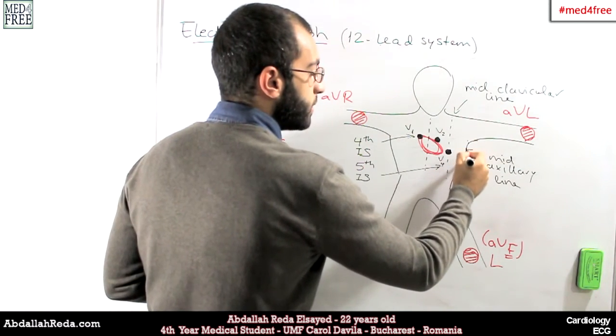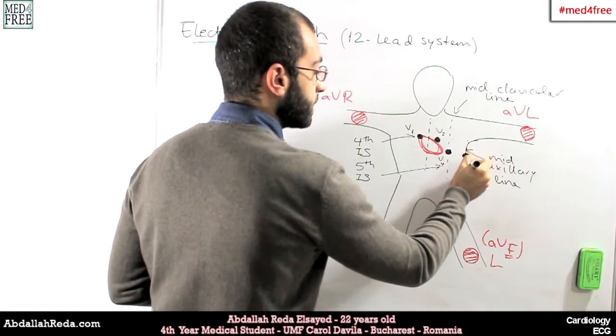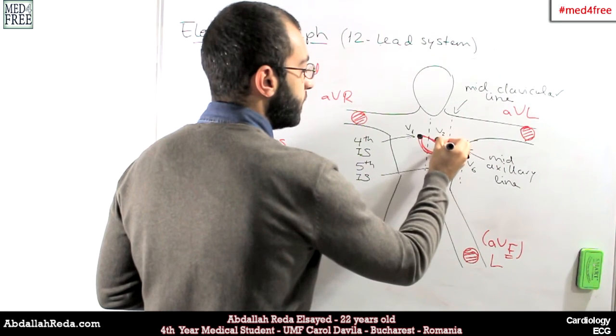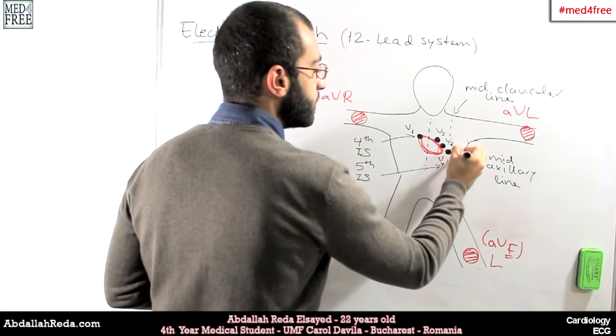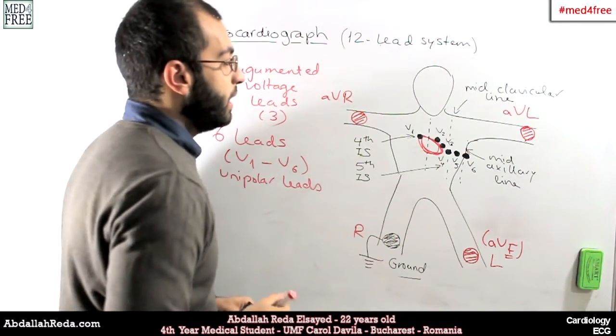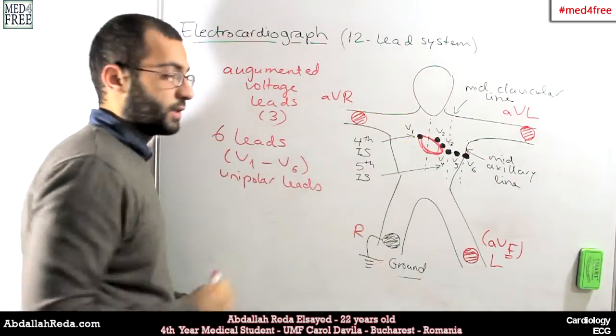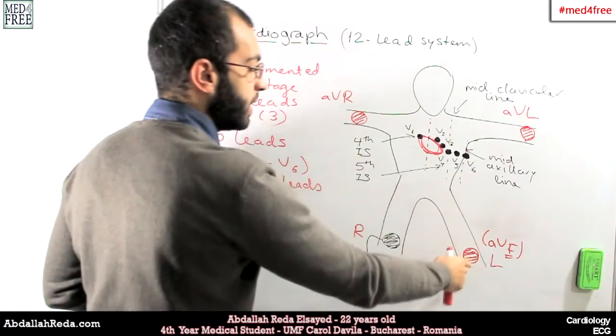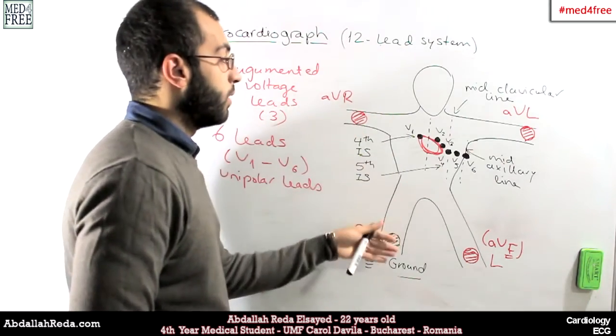And V6 is put exactly in the same area, but on the mid-axillary line. And then we have V3, which is situated between V2 and V4. And finally V5, which is situated between V4 and V6. So as we can see, those six leads, the unipolar leads, they are situated on a horizontal axis. So they monitor the activity of the heart horizontally. While those leads, the augmented voltage leads, they monitor the activity of the heart on a frontal plane.